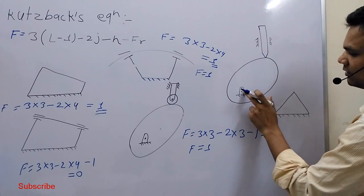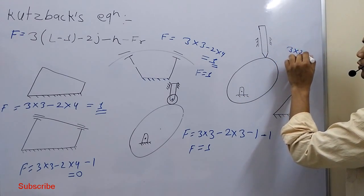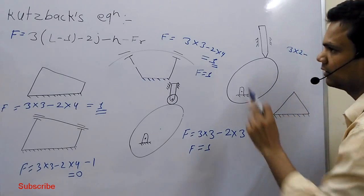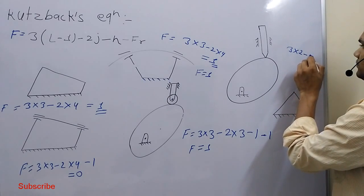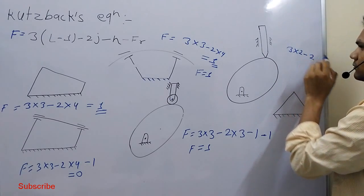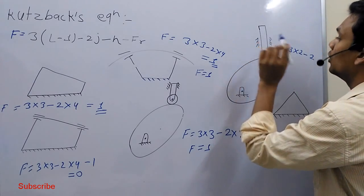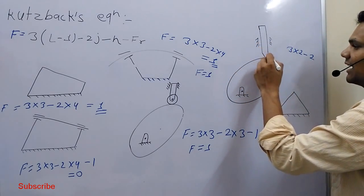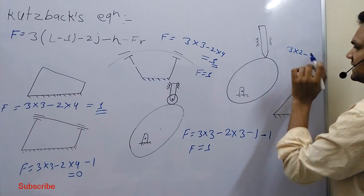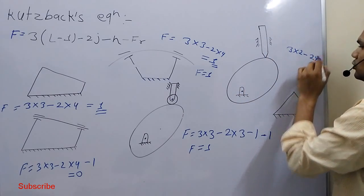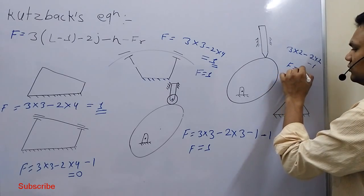Now in this case we consider one, two, three — so number of links is three, minus two. Number of joints: one, two, three. This is a higher pair — a point or line contact — this is an example of a higher pair. So you can see: two into two, this is a higher pair, minus one. F is equal to one.